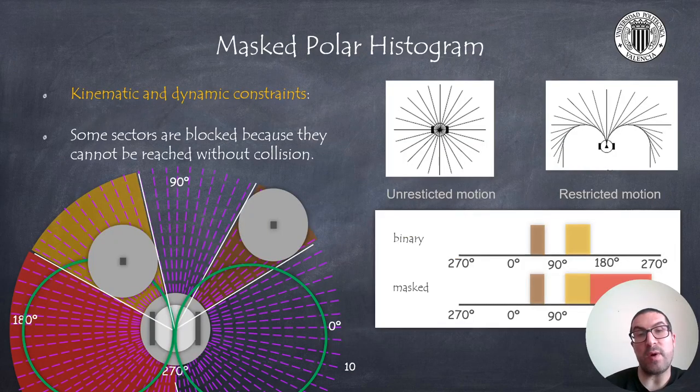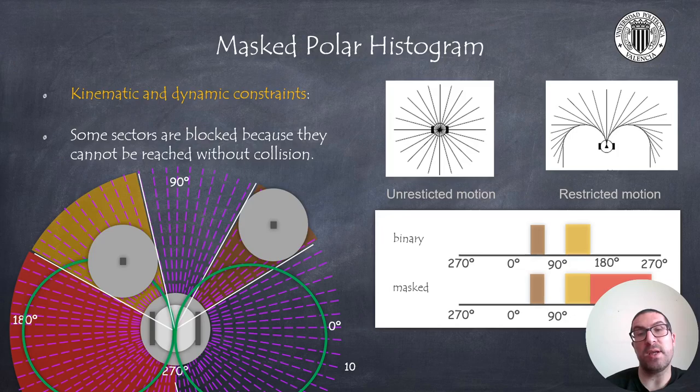And the last histogram we need to build is the masked histogram. This histogram takes into account the fact that the robot has some kinematic or dynamic constraints, and therefore there's a minimum turning radius. This implies that if, in order to reach a free sector, or a sector that was classified as free in the binary histogram, we must necessarily go through another sector that might be blocked, then in that case those sectors will be also blocked.